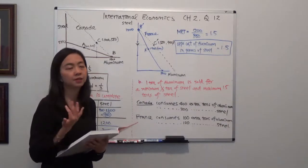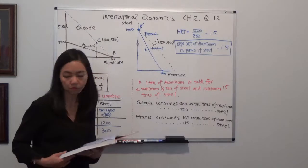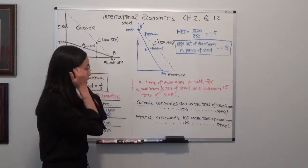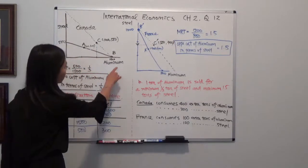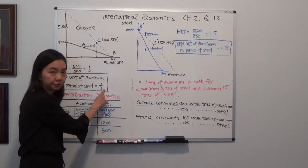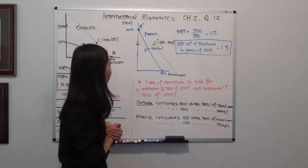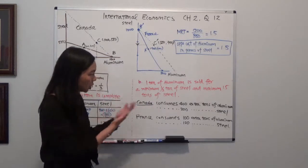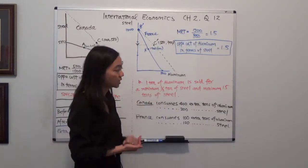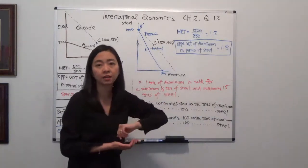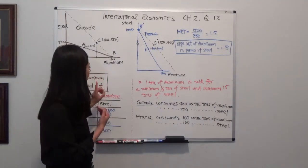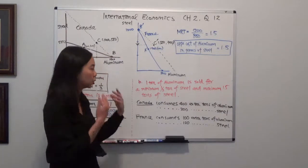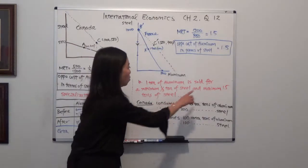Part B asks about the price of aluminum — specifically the upper and lower bounds. Aluminum is sold for one-third ton of steel in Canada, and 1.5 tons of steel in France. So the terms of trade will be between one-third ton of steel and 1.5 tons of steel for every ton of aluminum. That is the price range for aluminum.